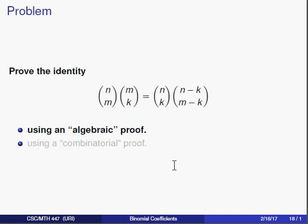Let's take a look at a problem. Here's what I mean by an identity. This is a statement involving binomial coefficients where one side is just equal to the right hand side, no matter what n, m, and k are, as long as they're chosen appropriately. For instance, if I were to take n to be 5, m to be 3, and k to be 2...